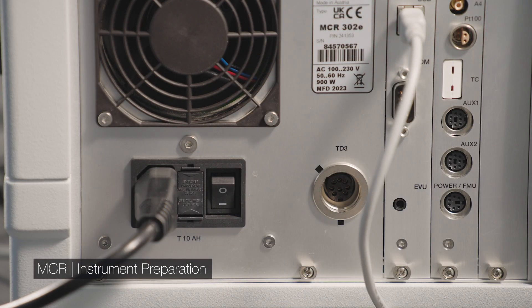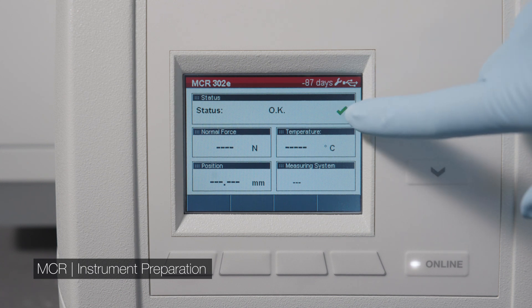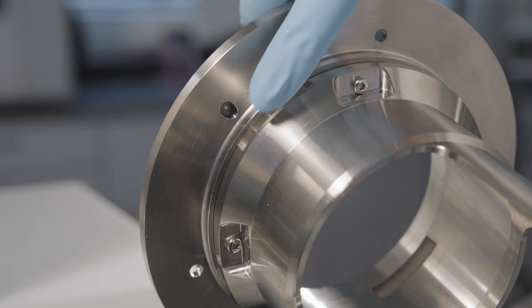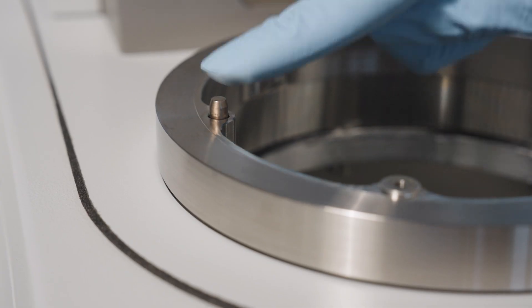Switch on the instrument. Make sure that the compressed air supply is on. Mount the measuring cell holder in alignment with the index pin.